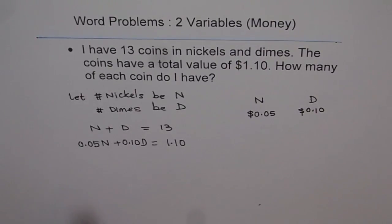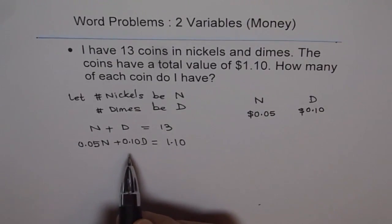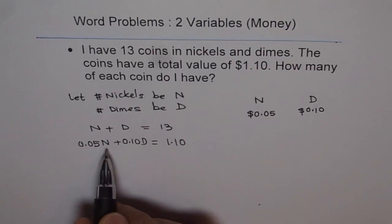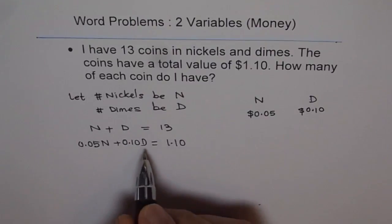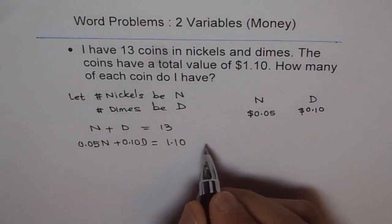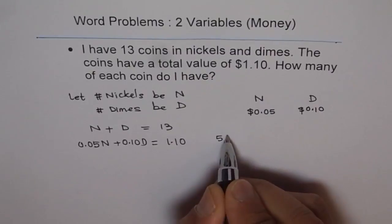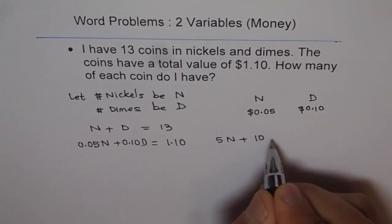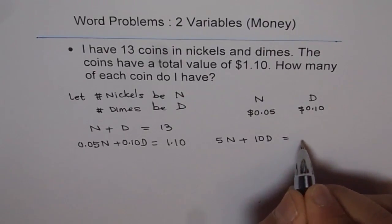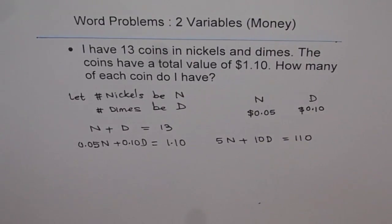The second statement, or the equation in this case, has lot of decimals. So let's get rid of these decimals. So what we will do is, we will multiply the second statement by 100. So if I multiply the second statement by 100, I get 5 nickels plus 10 dimes equals to 110. So in a way, I have written the equation in terms of cents.